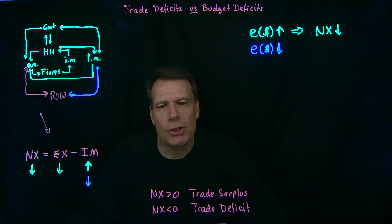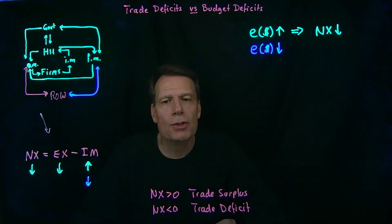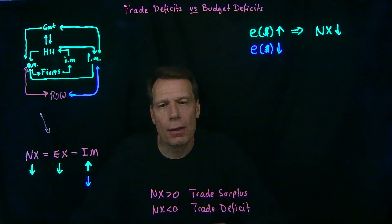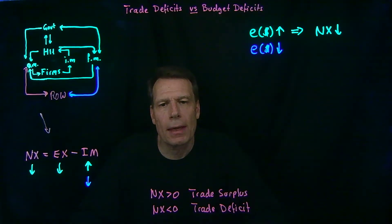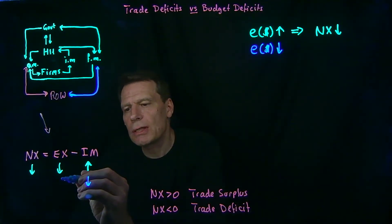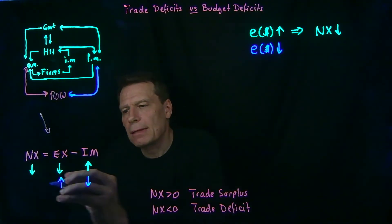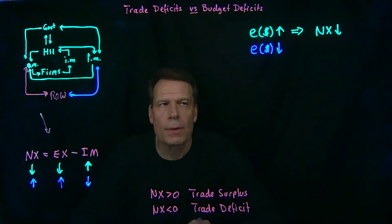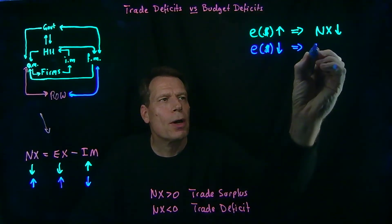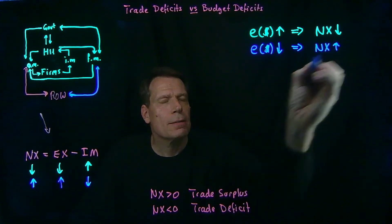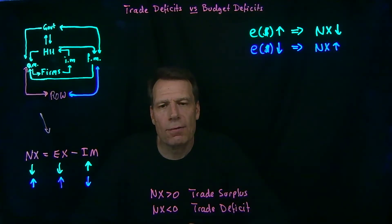When the dollar depreciates against the euro, then by definition, the euro appreciates against the dollar. A stronger euro will be able to buy more dollars for every euro. So when Europeans come to the U.S. to buy U.S. goods, those goods are becoming cheaper for them. Exporting is becoming cheaper, and as exporting becomes cheaper, we'll see more exports. When we see more exports and fewer imports, net exports are going to increase. So a depreciation of the dollar will cause net exports to increase — in other words, the trade deficit is going to fall.